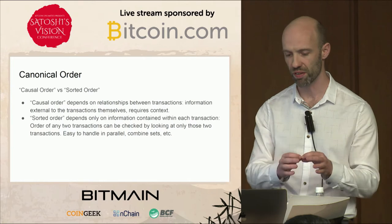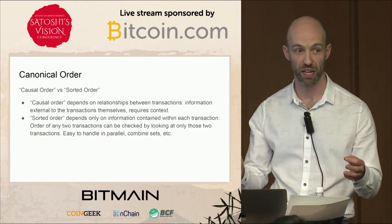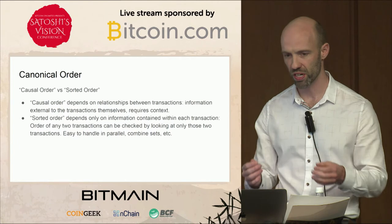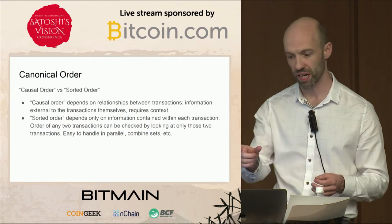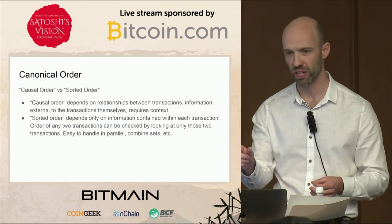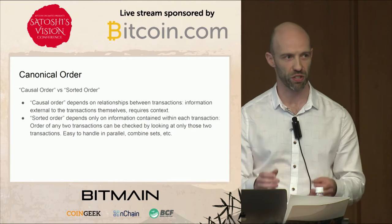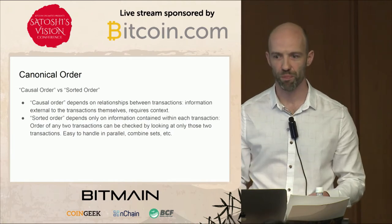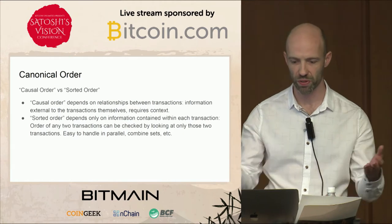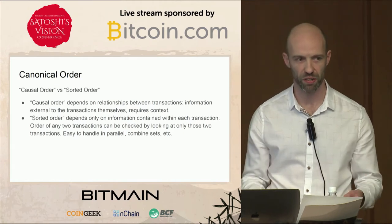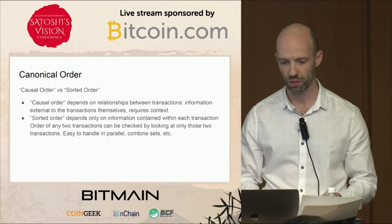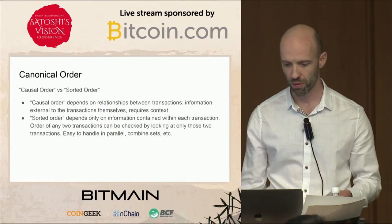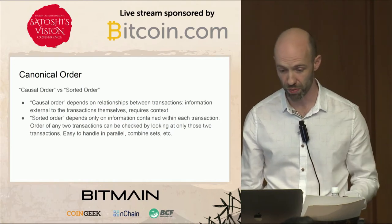Whereas if you have a sorted order — say transactions are sorted by their transaction hash — you can just look at two transactions and know they're in the correct order with respect to each other. Or you can have two sorted lists and say this list and that list are in the correct order because you can just check that it's all in order within each list. It's very easy and easy to combine them also.